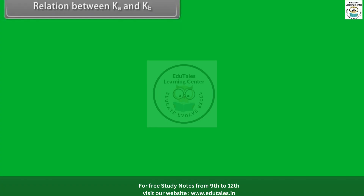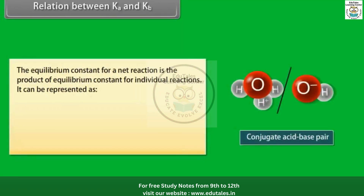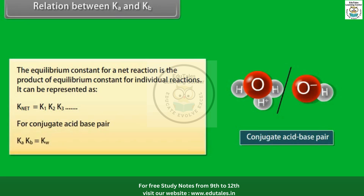Relation between Ka and Kb. The equilibrium constant for a net reaction is the product of equilibrium constants for individual reactions: K_net = K₁ × K₂ × K₃... For a conjugate acid-base pair, Ka × Kb = Kw.